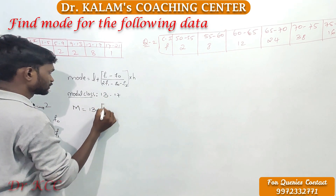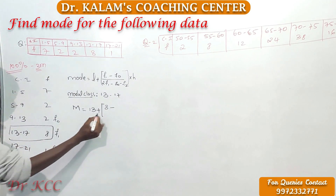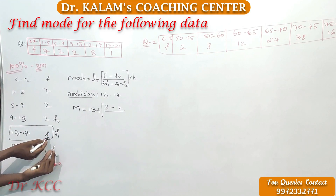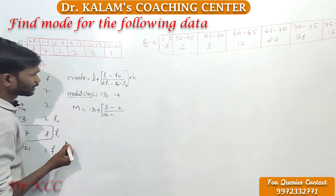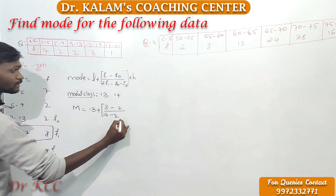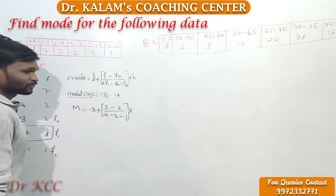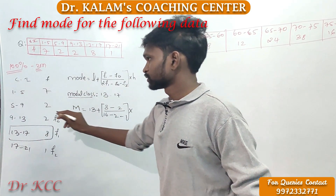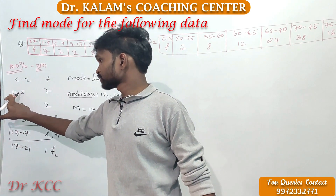So we have 13 plus. F1 is 8, minus F0 which is 2, whole divided by 2 into F1 — that is 2 into 8 equals 16 — minus F0 which is 2, minus F2 which is 1. Then H, the width of the class interval: upper limit minus lower limit is 5 minus 1 equals 4.